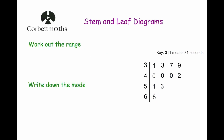Now we're going to look at the range, the mode and the median. The next question says: work out the range. The range is the largest number subtract the smallest number. The largest number, or greatest amount of time, was 68 seconds, and the smallest number is 31 seconds. So we do 68 subtract 31, which gives us 37. So the range is 37 seconds.